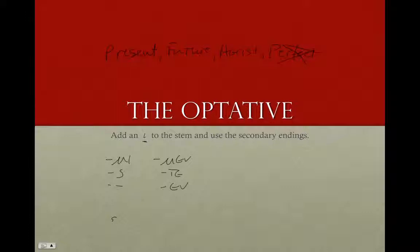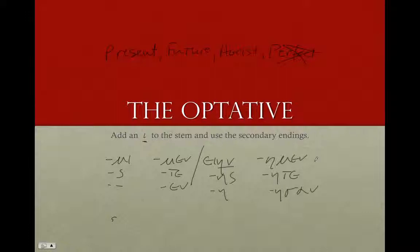There's also going to be an alternate set called long endings: -an, -ais (or really -an), -ace, -a, -amen, -eta, -aison. So we've got these long sets — standard on one side, and long on the other.